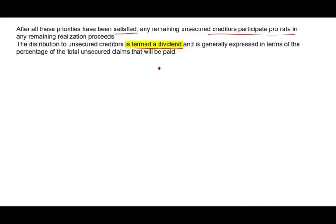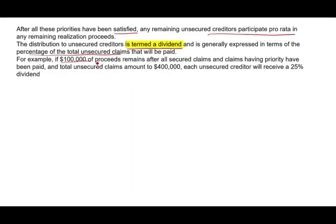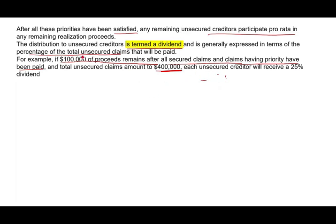After all priority claims are satisfied, any remaining proceeds are distributed to general unsecured creditors on a pro rata basis. This distribution is called a dividend — don't confuse it with a stock dividend. It is expressed as a percentage of total unsecured claims. For example, if $100,000 in proceeds remains after all secured and priority claims are paid, and total unsecured claims are $400,000, each unsecured creditor receives a 25% dividend — calculated as remaining proceeds divided by total unsecured claims.